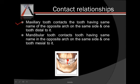The tooth distal to the mandibular central incisor is the mandibular lateral incisor. When we take the mandibular lateral incisor, it contacts the tooth having the same name — the maxillary lateral incisor — and one tooth mesial to it, which is the maxillary central incisor. This is the general rule for how teeth contact.